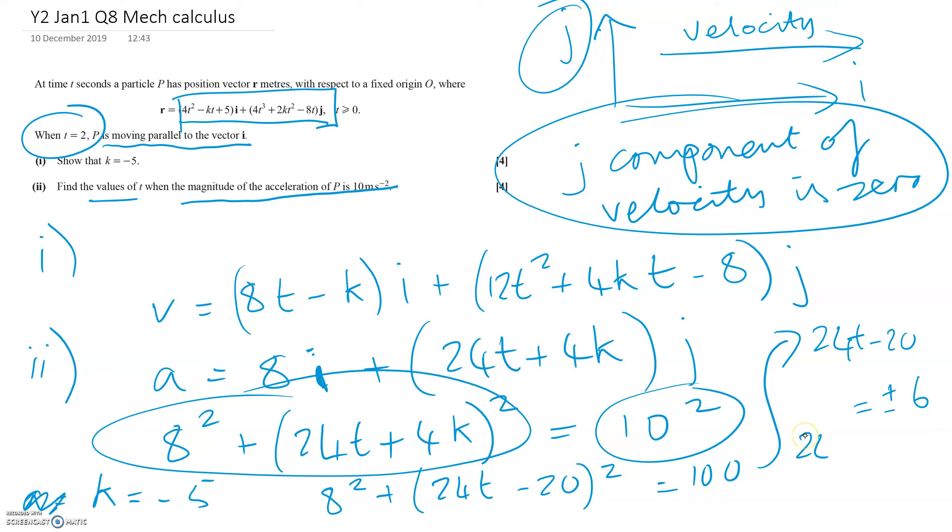That gives us 24T equals 26, which is 26/24 or 13/12. Or 24T equals minus 6 plus 20, which is 14, giving us 14/24 or 7/12. So those are the two values of T.